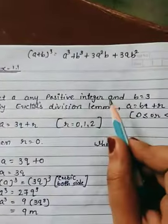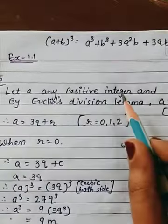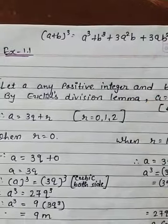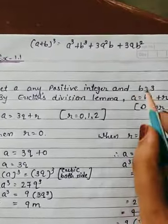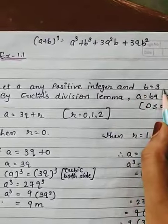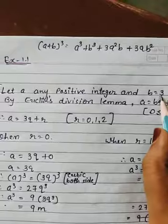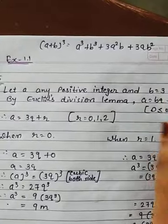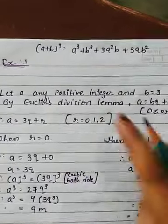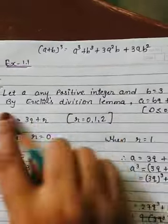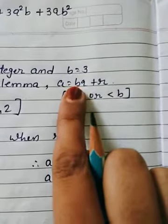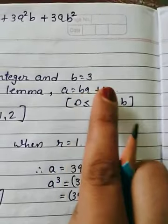Answer number 5. Let A be any positive integer. Suppose B is equal to 3. By Euclid's division lemma, as we know, A is equal to BQ plus R.